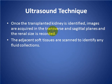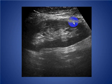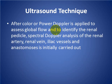Ultrasound technique: once the transplant kidney is identified, images are acquired in the transverse and sagittal planes and the renal size is recorded. The adjacent soft tissues are scanned to identify any fluid collection. Here you can see the transplanted kidney with the renal sinus, cortex, and differentiation between cortex and medulla. Color and power Doppler are then applied to assess global flow.